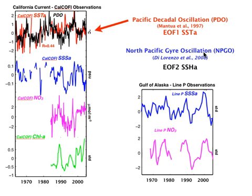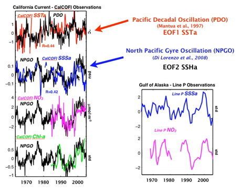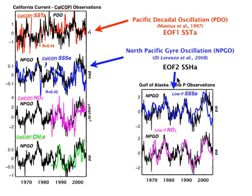If we look at the time series of the NPGO index and compare it to the California Current data, we find this index captures extremely well the low-frequency fluctuations of salinity, nutrients, and chlorophyll. If we also compare it to the Gulf of Alaska data, it captures that region very well too. This means the Gulf of Alaska salinity and nutrient time series are actually in phase with those in the California Current — something that has never been observed or reported before.